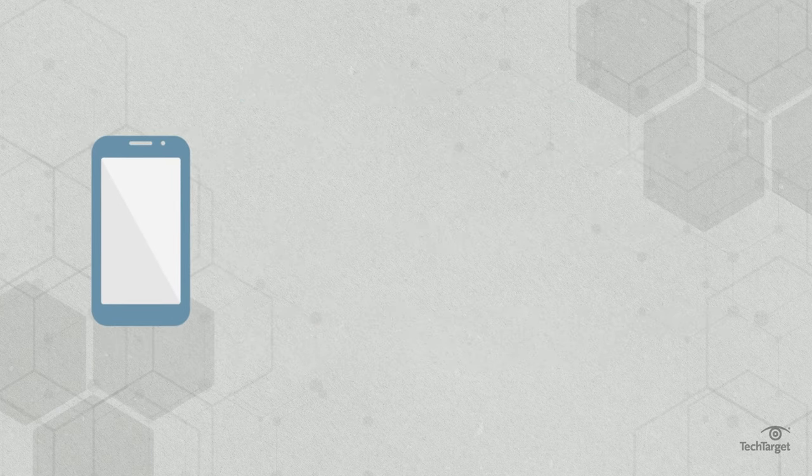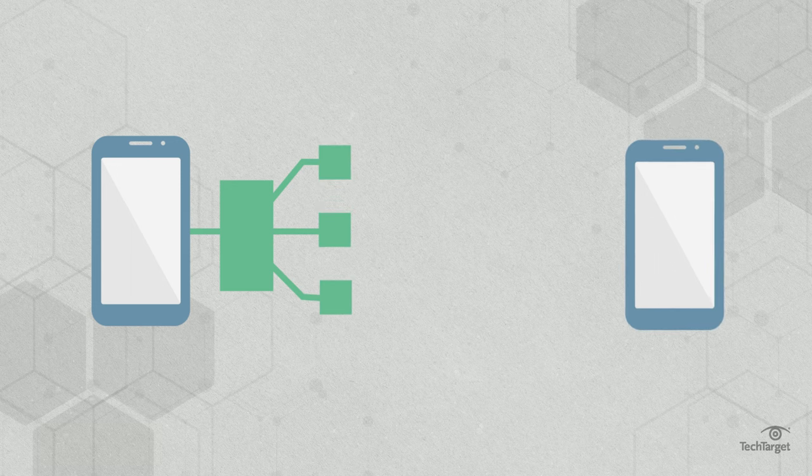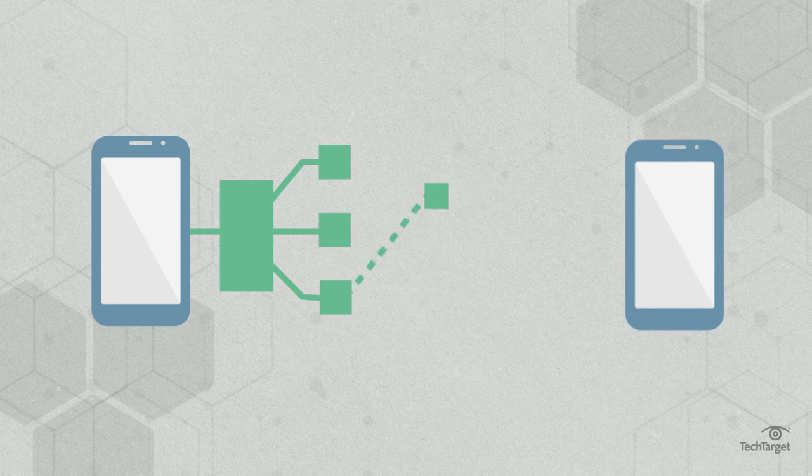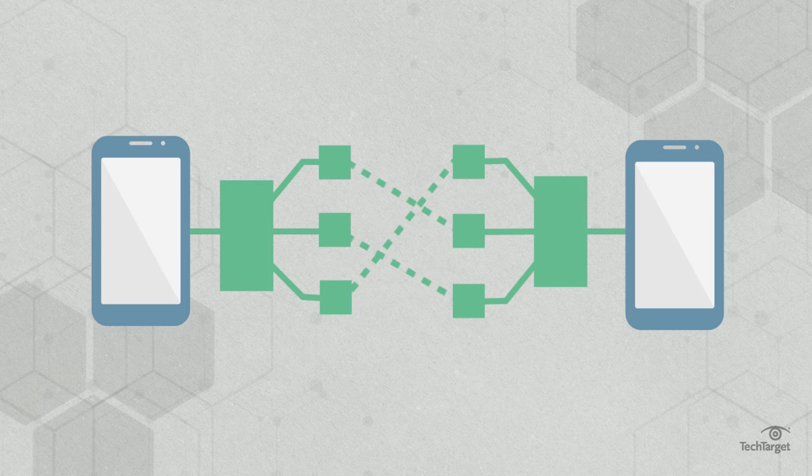Packet-switching, on the other hand, breaks information into data packets that are sent through a network independent of one another. Packets each take a different route, seeking the most efficient path as they become available. There is no fixed dedicated channel, like in circuit-switching.